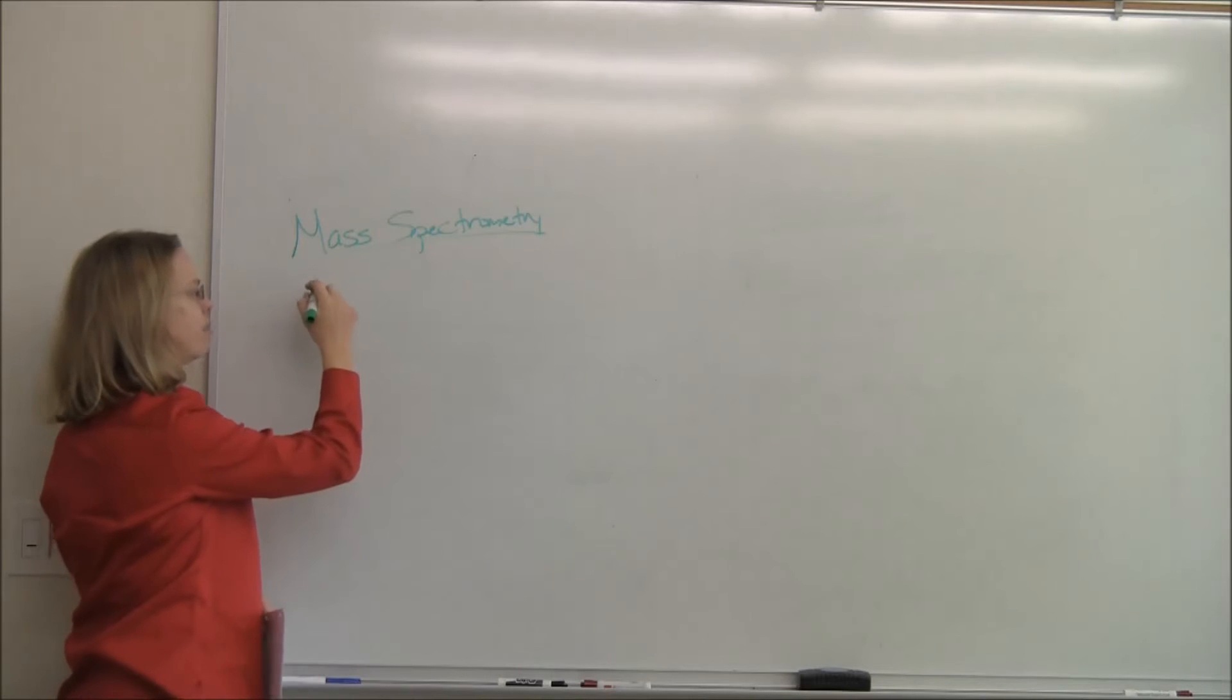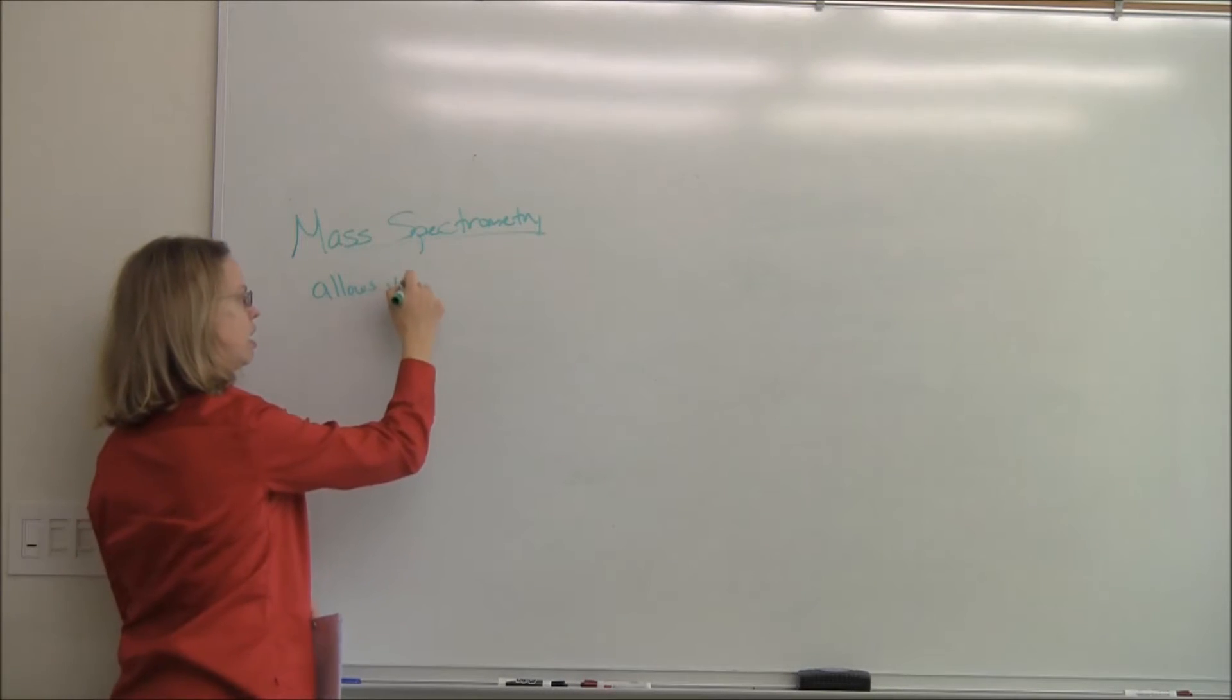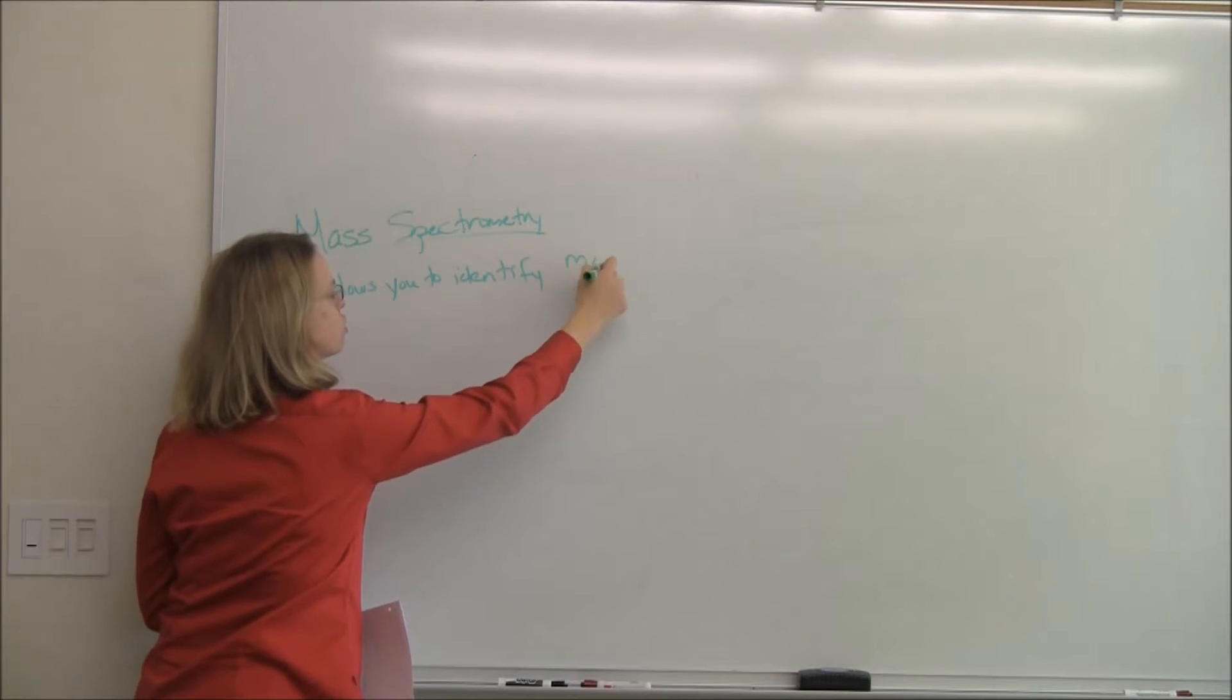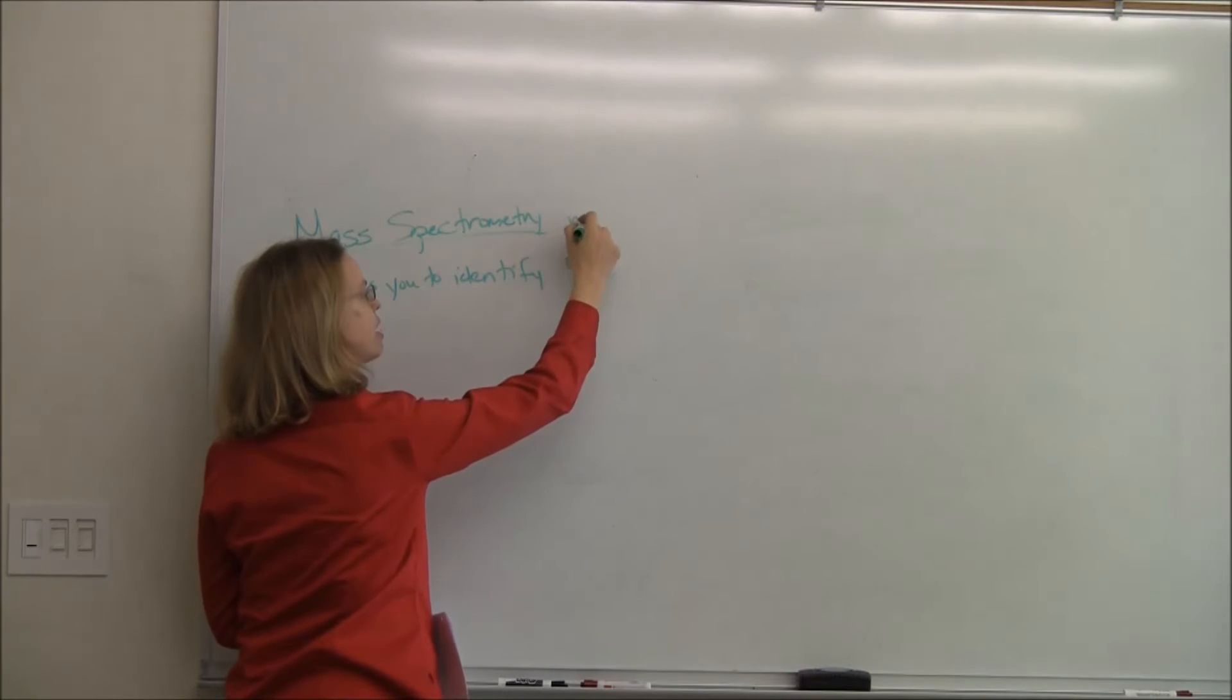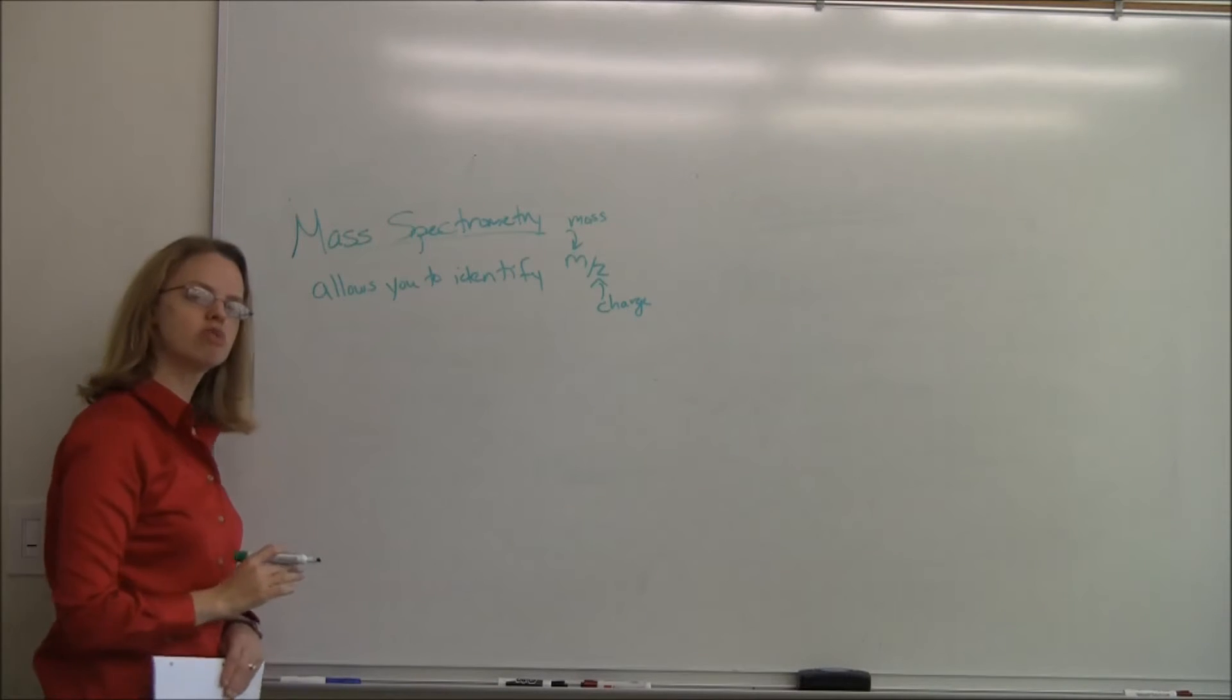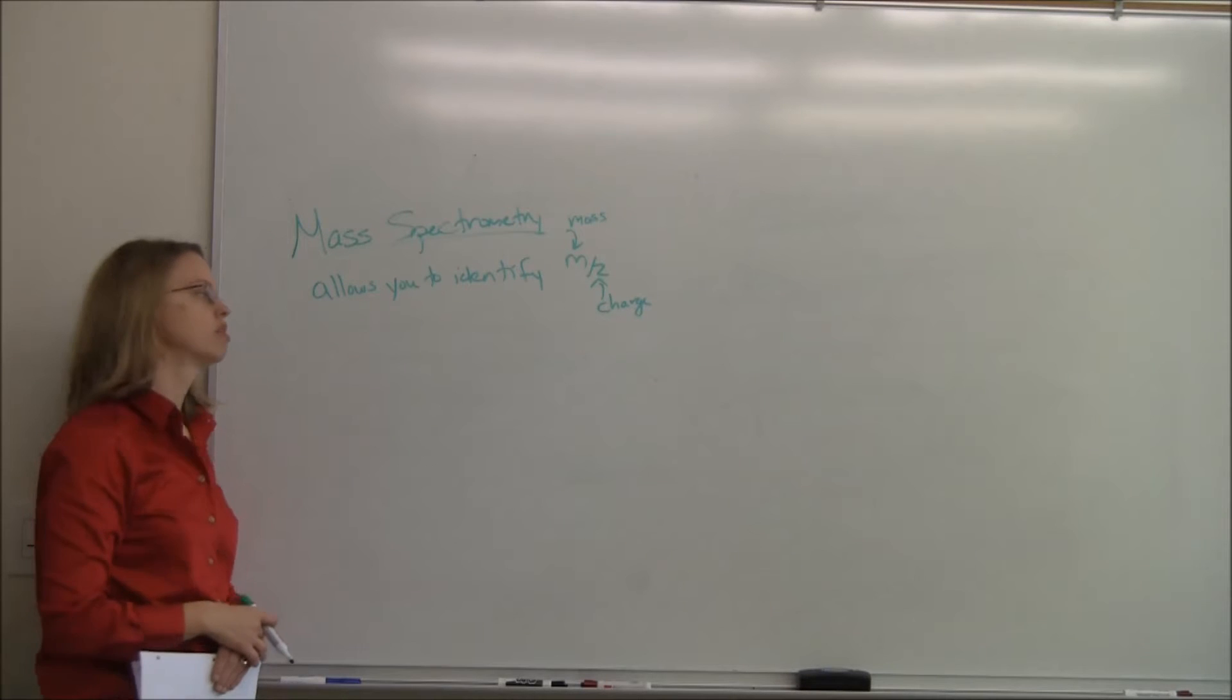It's useful because it allows you to identify a molecule using its mass to charge ratio. So we're going to be talking about this a lot in mass spectrometry. I'm going to use M over Z to mean mass to charge ratio. If you can look at a mass to charge ratio, you can usually get a molecular weight of a species and it's good for identification.